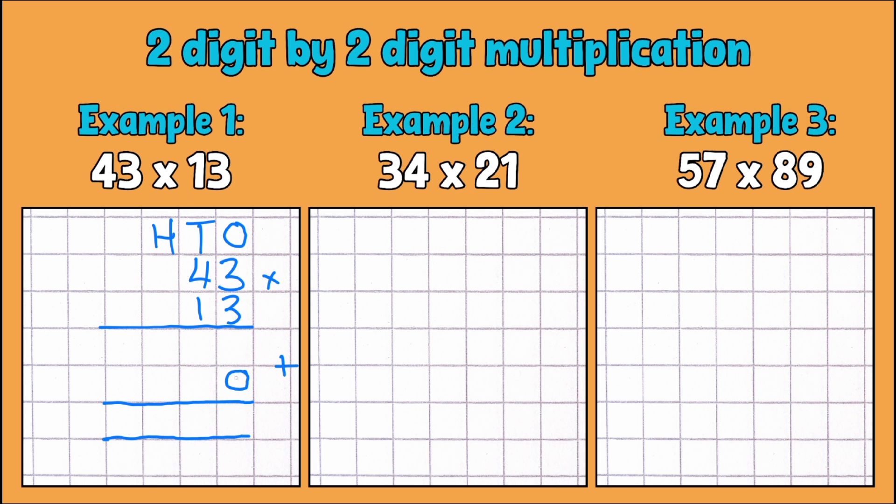So what we're going to do is try and multiply 43 by 3 first of all, because what we're doing really is partitioning 13 into tens and ones, and we're going to put the answers to that on here and 3 here on our top line.